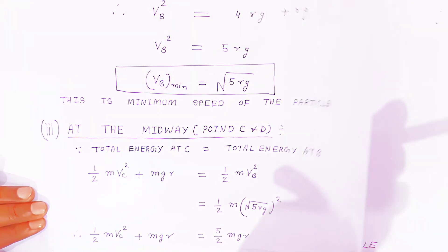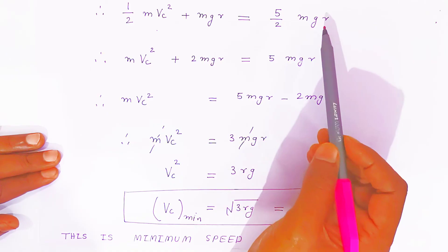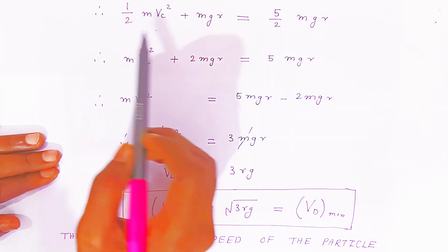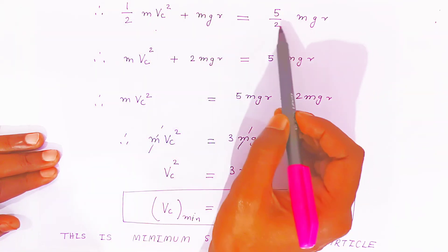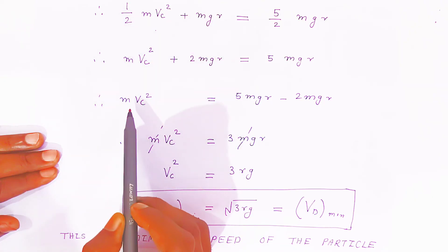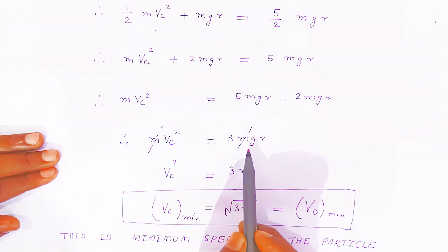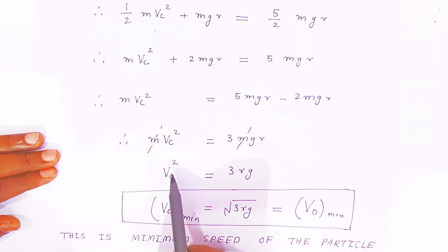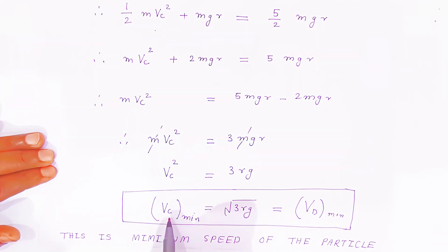Multiplying both sides by 2: Mv²_C + 2MgR = 5MgR. Mass cancels, giving v²_C = 5Rg − 2Rg = 3Rg. Therefore, minimum velocity at point C is v_C = √(3Rg), which is also equal to the velocity at point D.